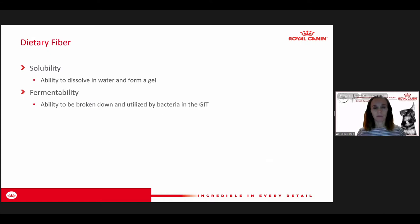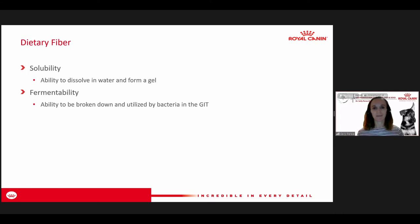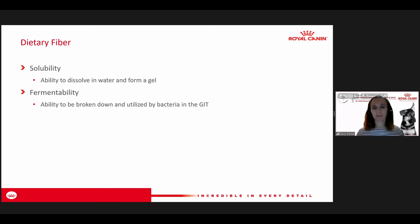Fiber is important because it serves as a good precursor for bacterial fermentation. Undigested proteins and fats reaching the colon can create problems, but fiber by definition is undigestible by our normal gastrointestinal enzymes — it's supposed to make its way down to the colon. That's where we can see positive fermentation and production of short-chain fatty acids that are beneficial for the GI tract.